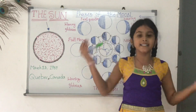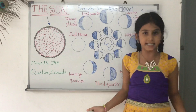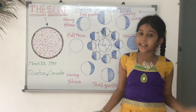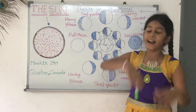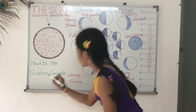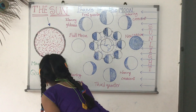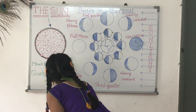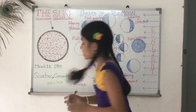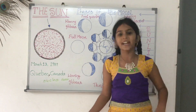The sun is a star, a huge ball of super hot gas. Its mass is so large that the pressure and heat in its core are high enough to start a process. This process releases huge amounts of light and heat.